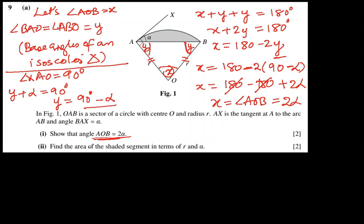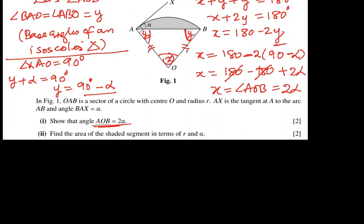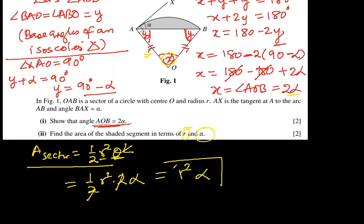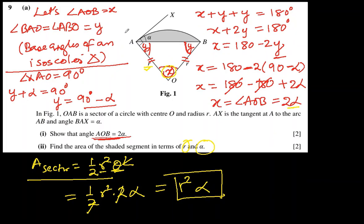Now for part A continued: find the area of the shaded segment in terms of R and alpha. The area of a sector is half R squared theta, using radians. The angle theta of the sector is X, which is now 2 alpha. So it will be half R squared times 2 alpha — the 2s cancel — giving area of sector equal to R squared alpha.